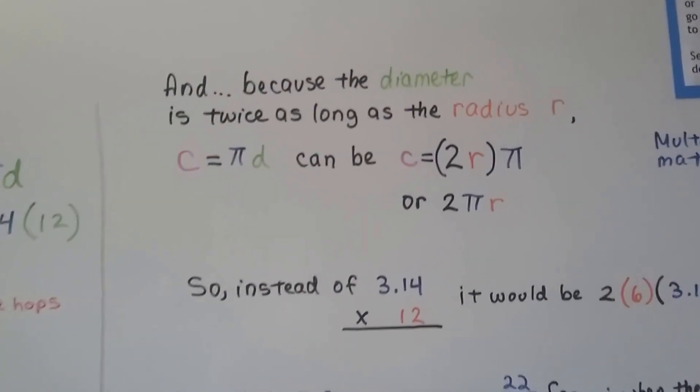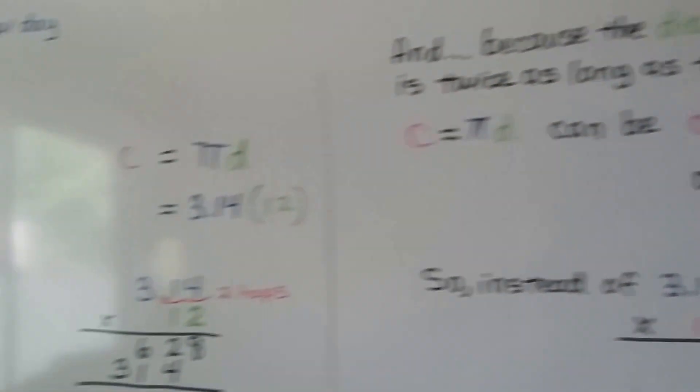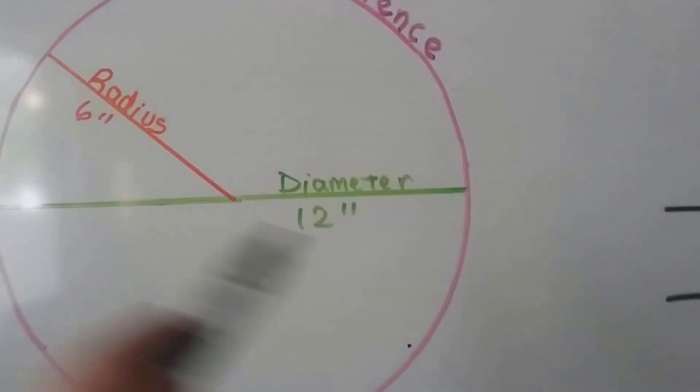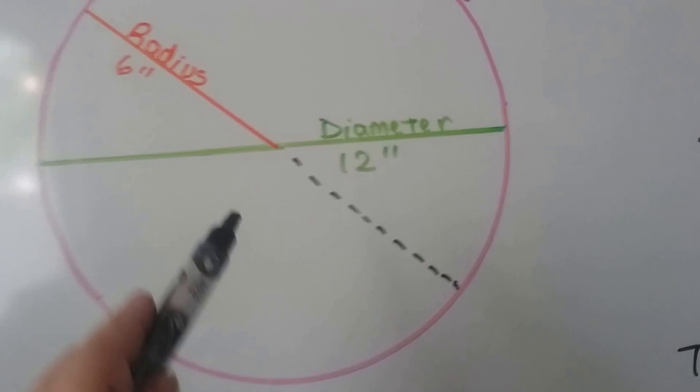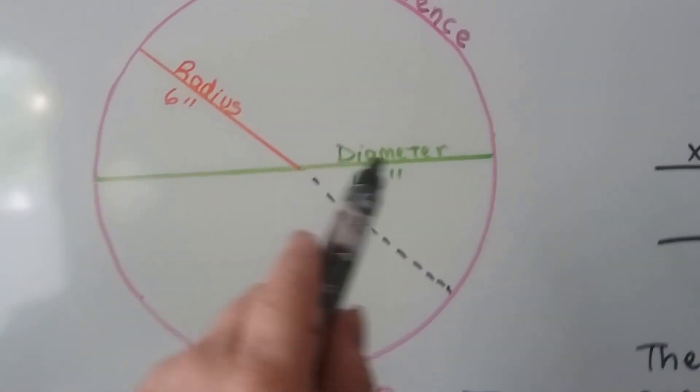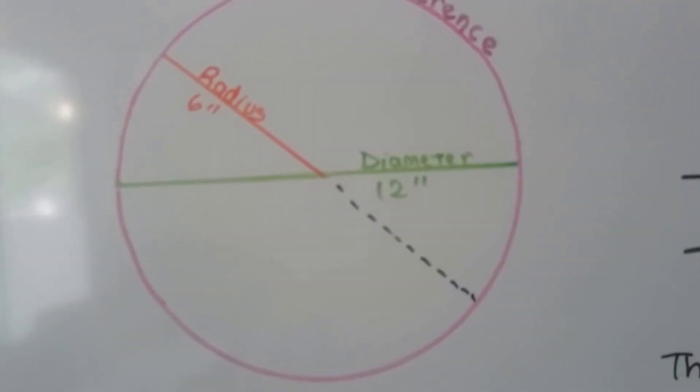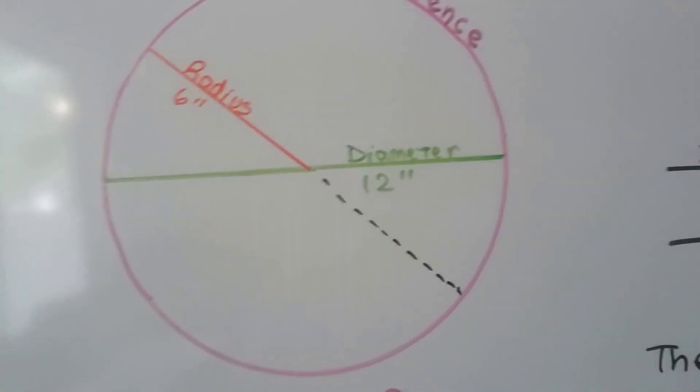Now, because the diameter is twice as long as the radius, if you take a look at this, here's the diameter, here's the radius, and the radius is just half of the diameter, or the diameter is twice the radius. It takes two of these to make one of these.